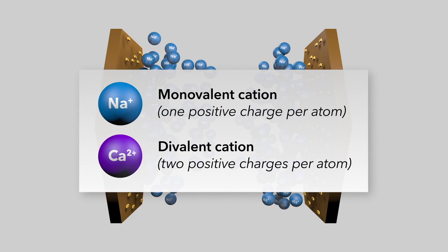Sodium ions are monovalent, and by this we mean that they have a single positive charge per atom. By contrast, calcium ions are divalent. They have two positive charges per atom.